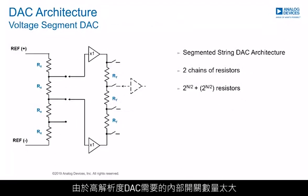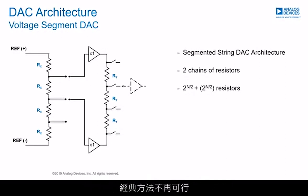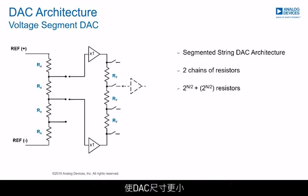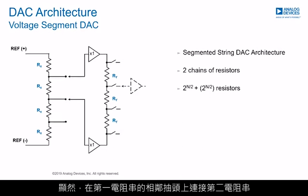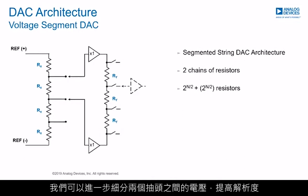The classical architecture has evolved to a segmented approach due to the required number of internal switches for high-resolution DACs, making the classical approach not feasible. Using a segmented string reduces the number of resistors required and thus makes the DAC smaller. This architecture is called a Kelvin-Varley divider and requires two chains of resistors — 2 to the power of N resistors. By connecting a second string of resistors across adjacent taps on the first string, we may further subdivide the voltage and thus increase resolution.